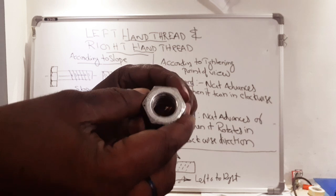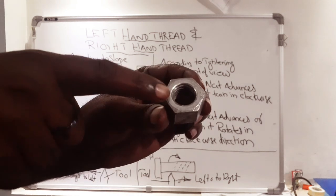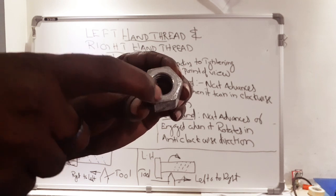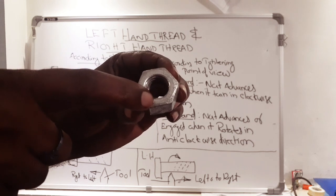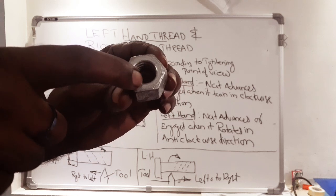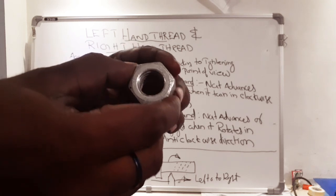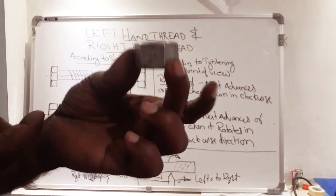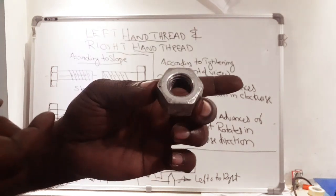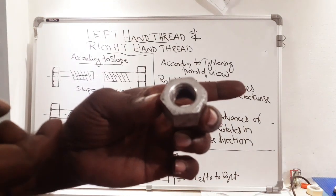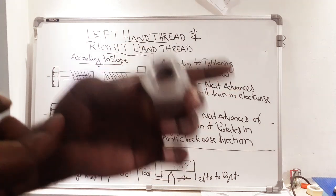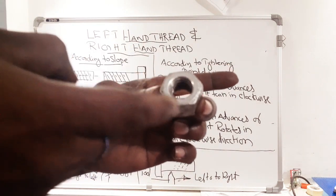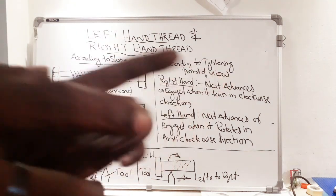This is the next component. In this component, the threaded part is provided internally — inside of the hole. That is called an example of internal thread, which is called a nut. A nut is an example of internal thread, where the threaded portion is provided inside of the hole.